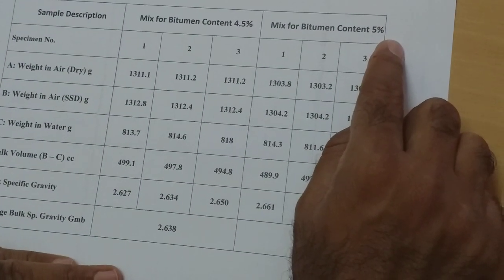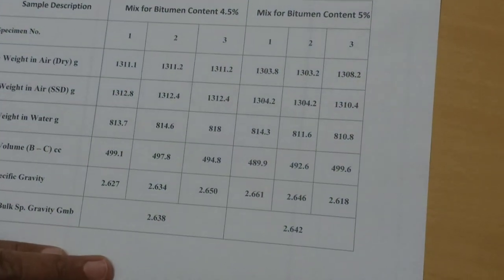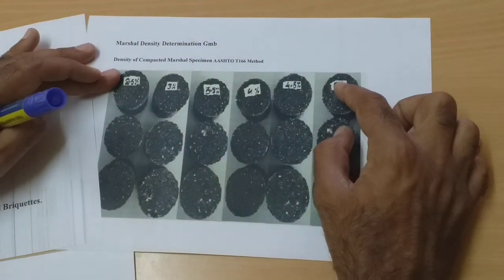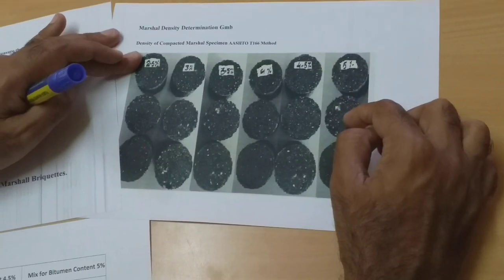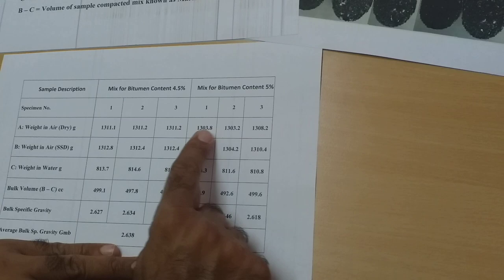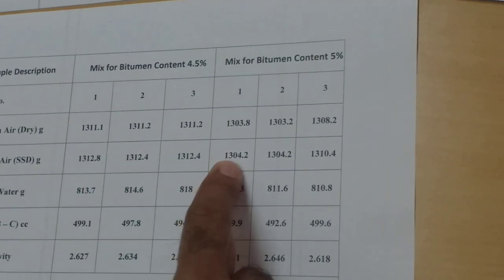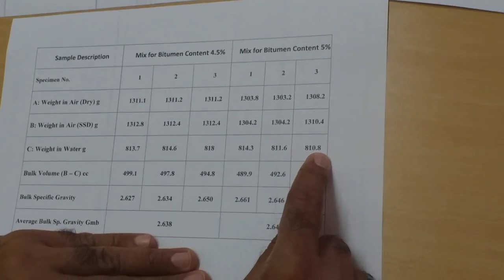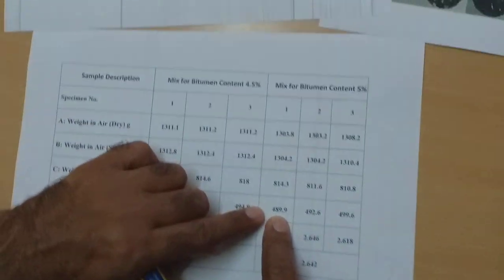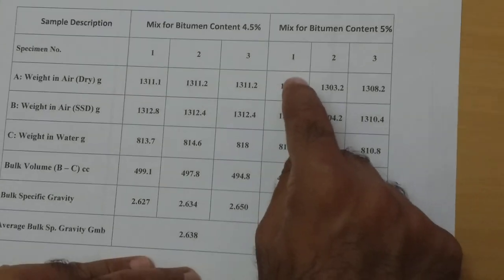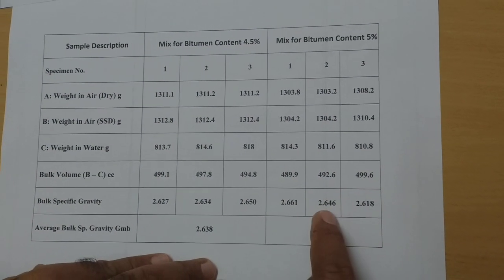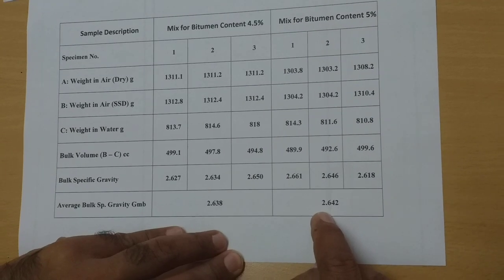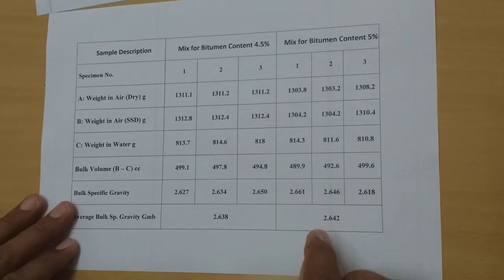Bitumen content is further increased to 5%. Again, three samples are taken. The dry weight of first, second, and third; SSD weight of first, second, and third; and weight in water of first, second, and third specimen. The difference gives the volume for each. Dividing dry weight by volume gives specific gravity values of 2.661, 2.646, and 2.618, with an average of 2.642. This is the last value for this bitumen content.